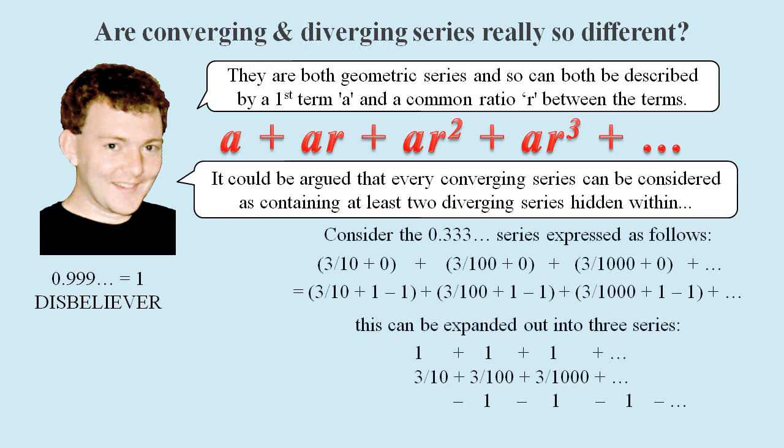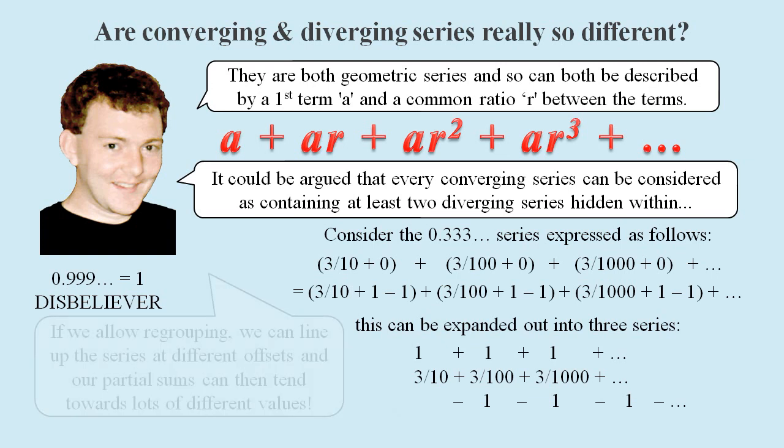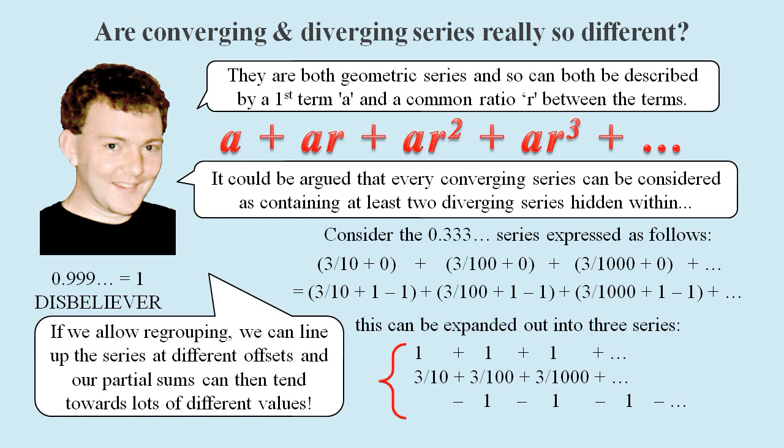In fact it could be argued that every converging series contains diverging series hidden within them if we allow regrouping of terms. Then even a converging series like 0.3 recurring can easily be converted into three series, such as 1 plus 1 plus 1 and so on, minus 1 minus 1 minus 1 and so on, and the original series itself. Then we can line up the terms at different offsets, making the whole thing tend towards different values, such as 1 and 1 third, or 2 and 1 third and so on. If sequences and series have real world meanings, then this would come as no surprise, because obviously the rearrangement of terms will change the meaning of a series or sequence.